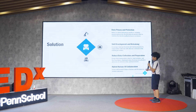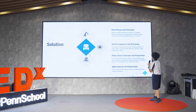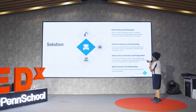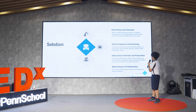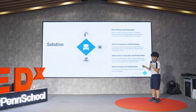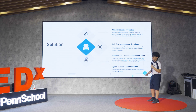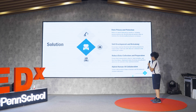Here are my solutions. For data privacy and protection, we need to train AI even more because with intensive training data, AI can improve its security and prevent data leaks like the Equifax case. For skill development and retraining, we should encourage ongoing education and training programs to develop new skills demanded by the evolving job market, so humans can remain employed in roles that AI cannot replace.